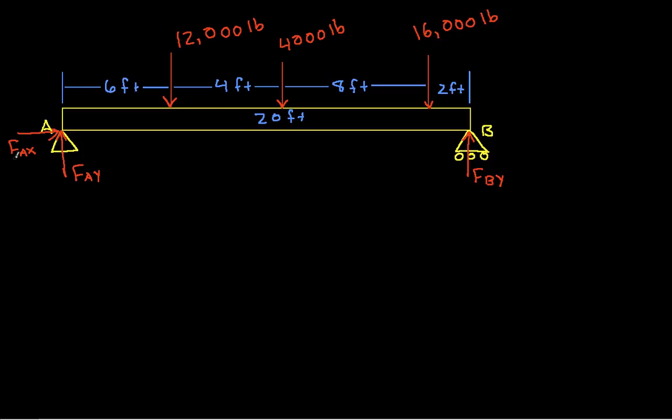If we sum all of the forces in the X direction, it's clear that F_AX is equal to zero. And that's the last time we'll talk about F_AX.